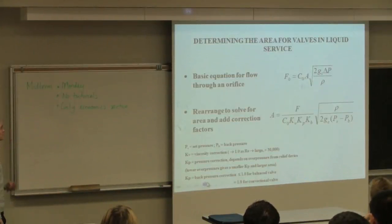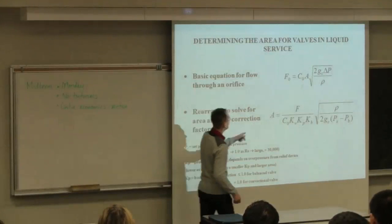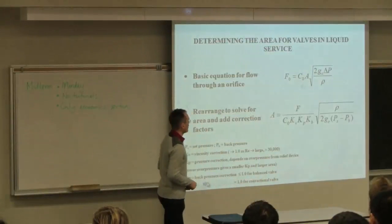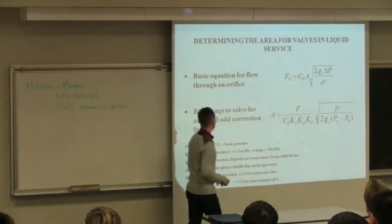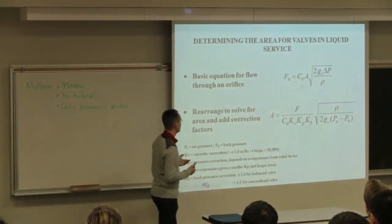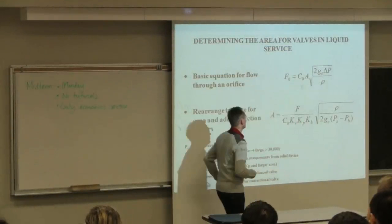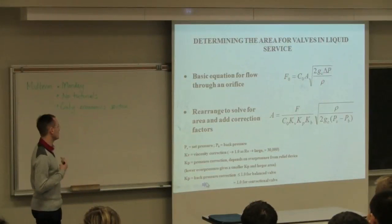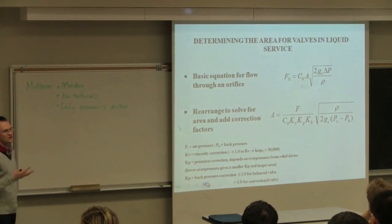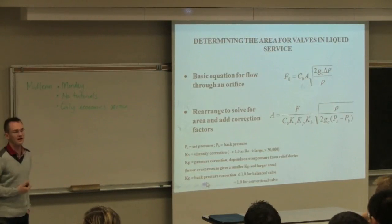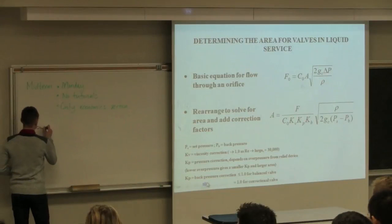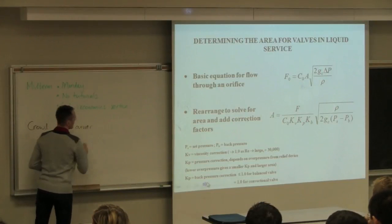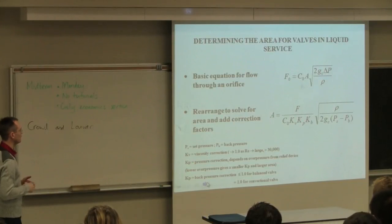So how do we size those relief valves once we know the flow we anticipate? This is our maximum flow. We use the standard equations for flow through an orifice that you would have seen in your fluid flow course. We simply rearrange it for the cross-sectional area there. So the purpose of this course isn't for us to go through these and apply these calculations, but to recognize that there is a procedure to do it.